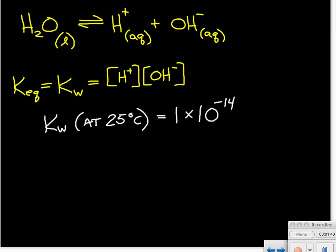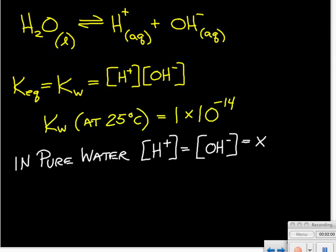For water at 25 degrees C, the equilibrium constant for this is 1 times 10 to the minus 14. We can use this information to find out what the concentration of the hydrogen ion and the hydroxide ion is at 25 degrees C. Because in pure water, the concentration of the hydroxide ion is equal to the concentration of the hydrogen ion.